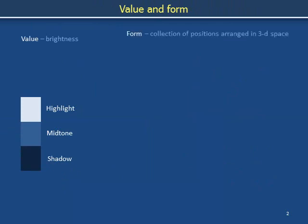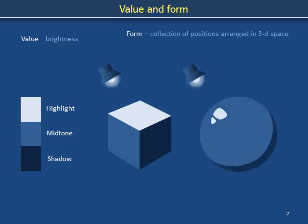Form is a fancy word for a collection of positions arranged in three-dimensional space. For example, using this spotlight we can delineate a form called a cube. As another example, using this spotlight we can delineate a reflective sphere. The use of a spotlight to convey a form is one of the most common uses of shading.